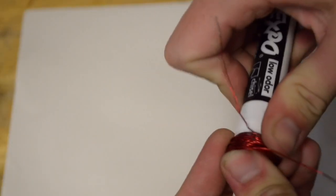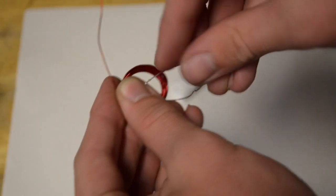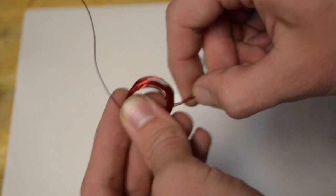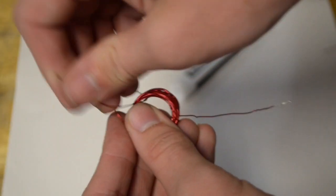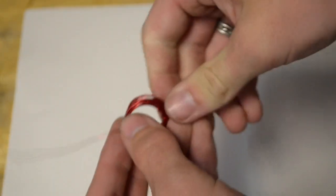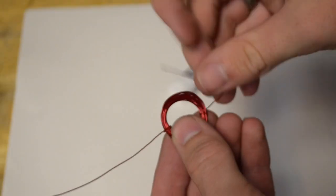Once you have finished coiling the wire on the marker, go ahead and slip it off. And now that we have it off, go ahead and take this side and pull it on through. And do the same with the other side. By looping it through a couple of times, it should hold the coil in position.